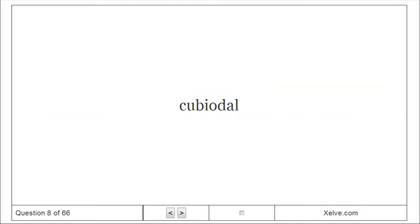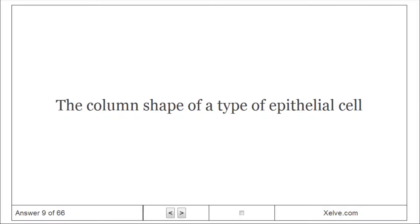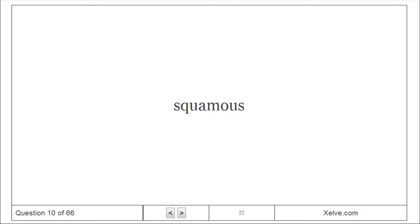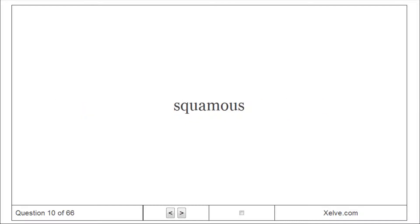Cuboidal: The cubic shape of a type of epithelial cell. Squamous: The flat tile-like shape of a type of epithelial cell.